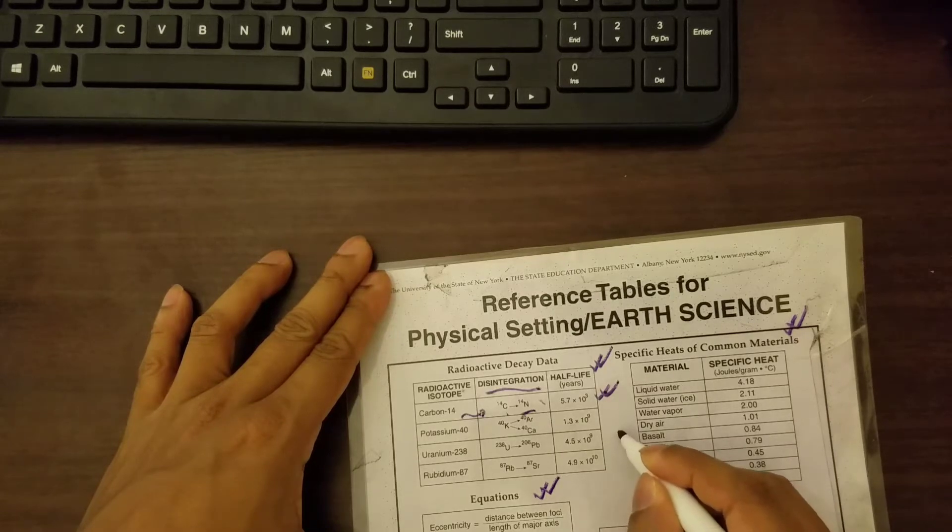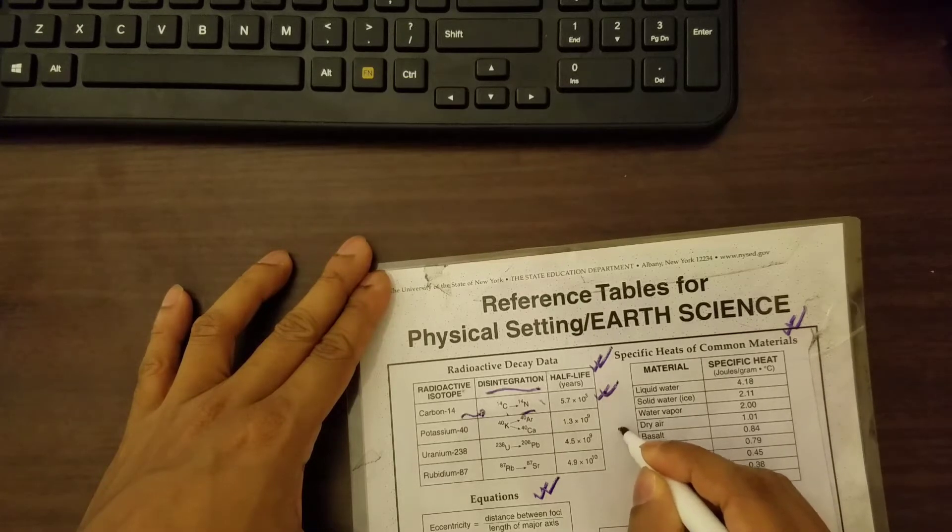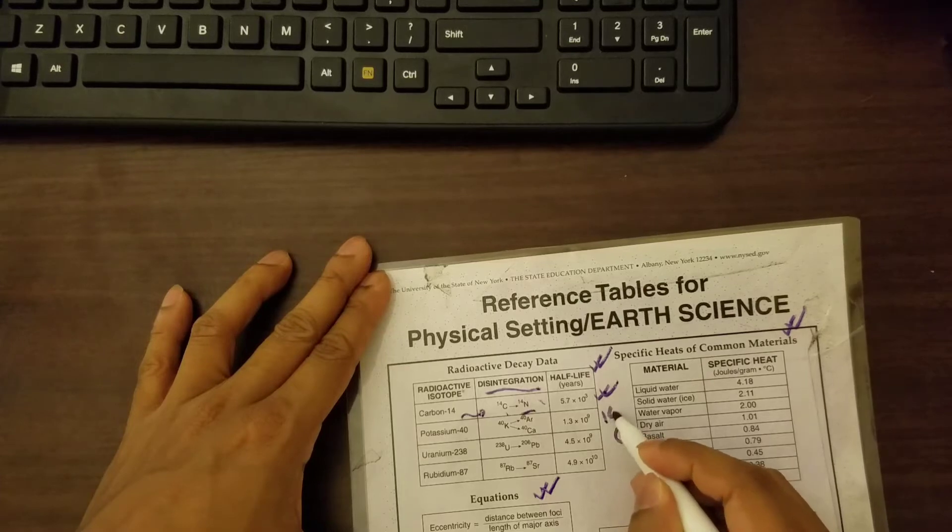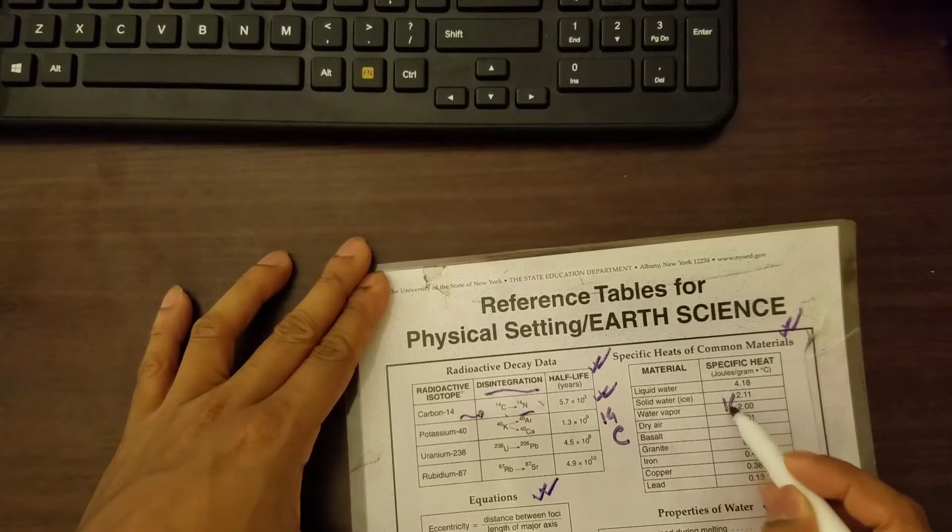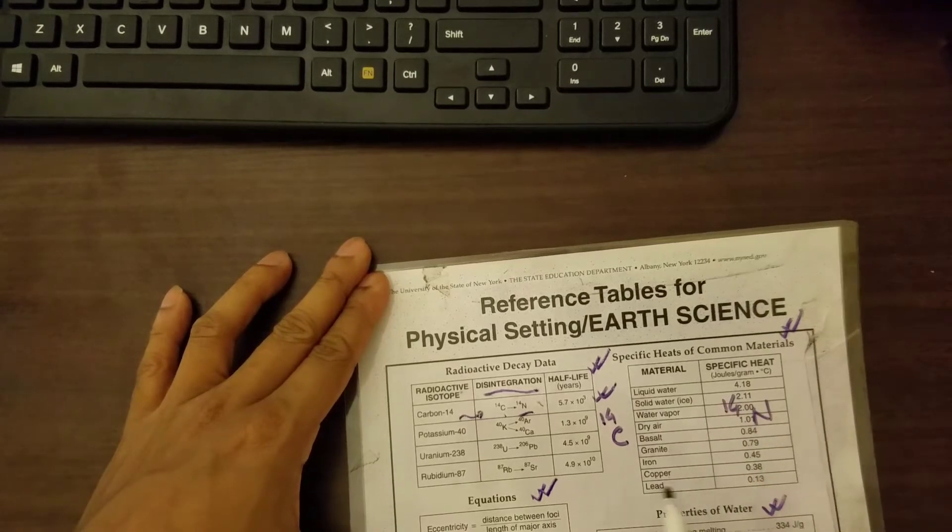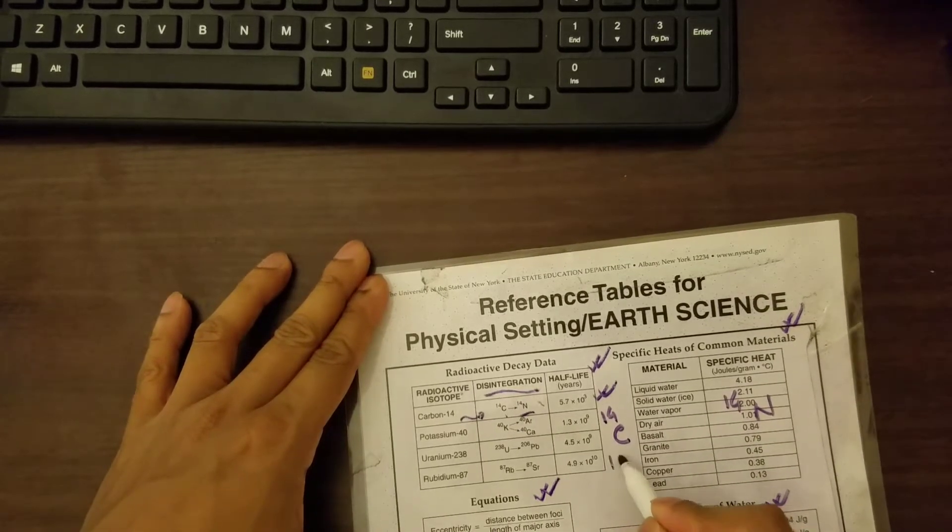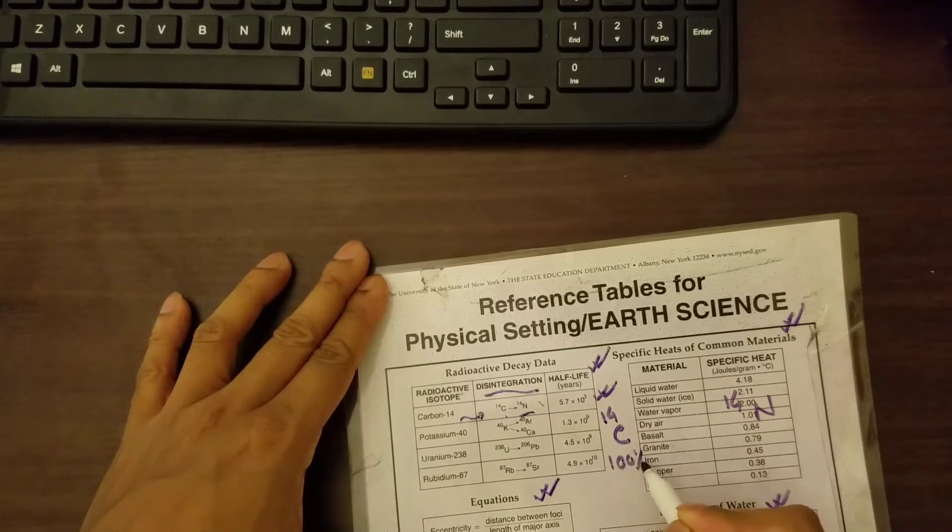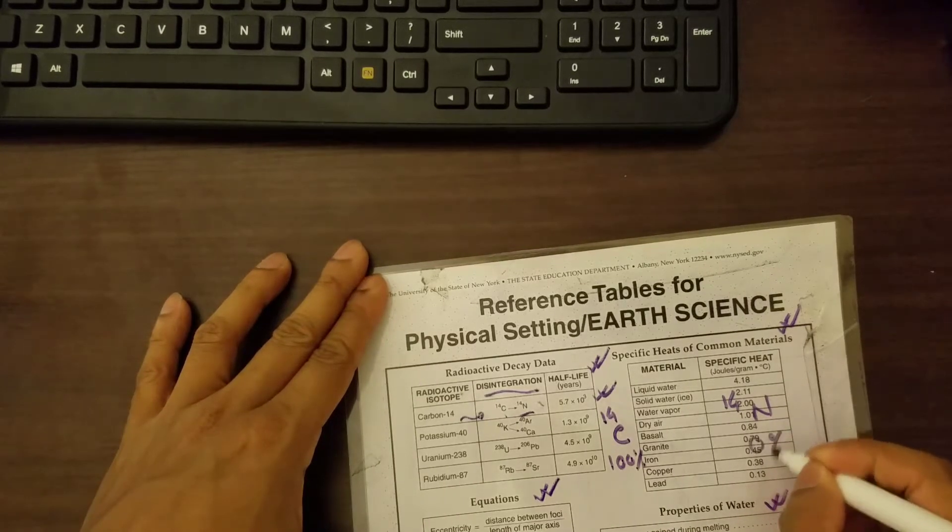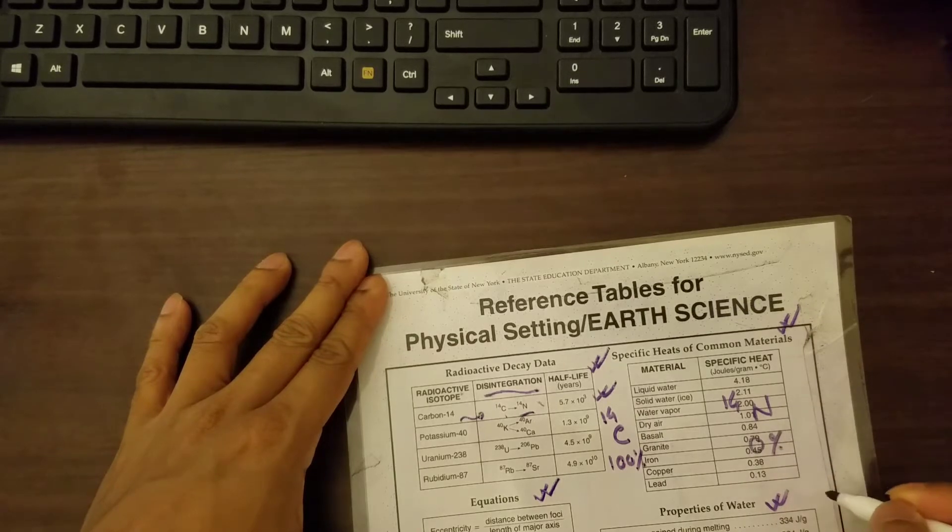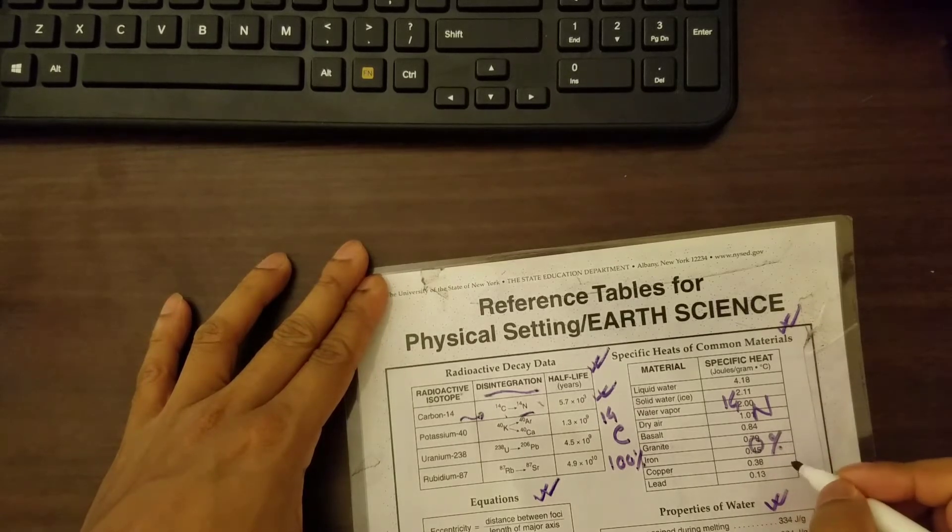So we know that carbon will become nitrogen. So initially, we have carbon-14, which is an isotope, and it will become nitrogen. So initially we have 100% carbon-14 and 0% nitrogen.